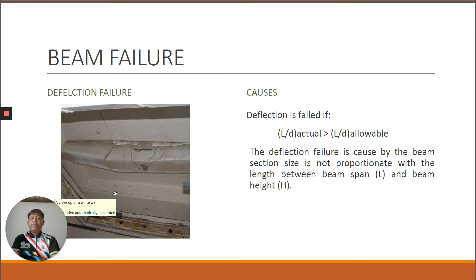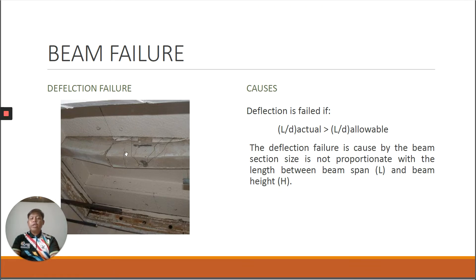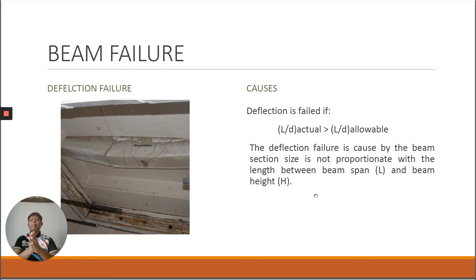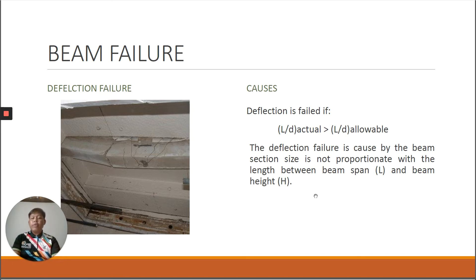The third type of failure is deflection failure of the beam. This figure shows how the beam fails due to deflection when it exceeds the allowable deflection. Deflection fails if L/D actual is more than L/D allowable. The deflection failure is caused by the beam section size being disproportionate with the beam span relative to the beam height H — sometimes the beam is too long and its size is too small.